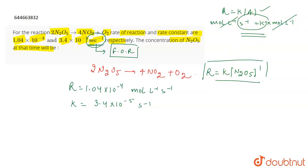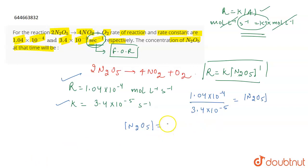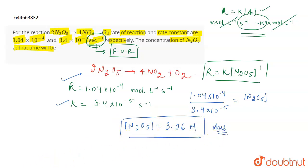Now, to calculate the concentration of N2O5, we have the value of rate and the value of K. So, concentration of N2O5 = rate ÷ K = (1.04 × 10⁻⁴) ÷ (3.4 × 10⁻⁵). This gives the concentration of N2O5 approximately equal to 3.06 molar. This is the correct answer for the question.